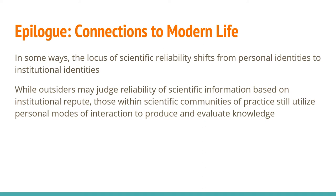Shapin ends the book by making connections between the scientific community of Robert Boyle and the ways that we conceive of and practice science today. The locus of scientific reliability has shifted from personal identities of those in communities of practice to institutional identities, and outsiders may judge the reliability of modern scientific information based on institutional repute. However, those within scientific communities of practice still utilize personal modes of interaction to produce and evaluate knowledge.